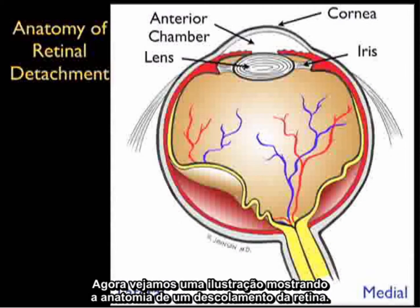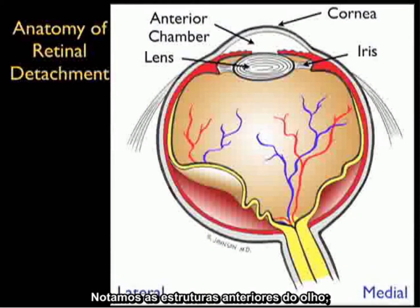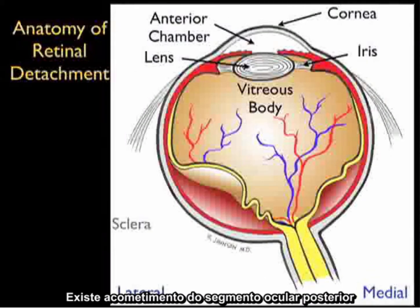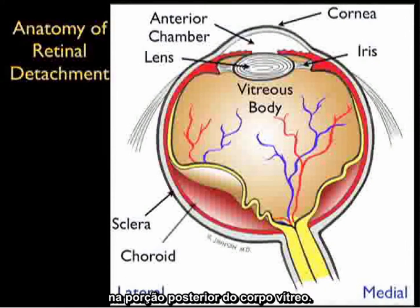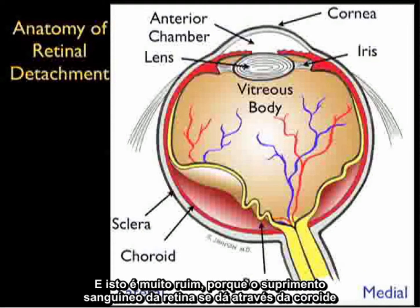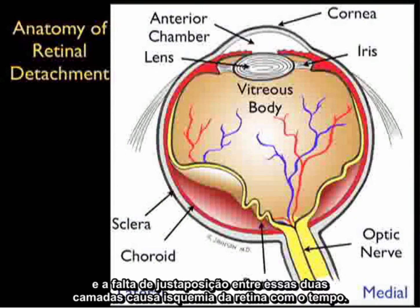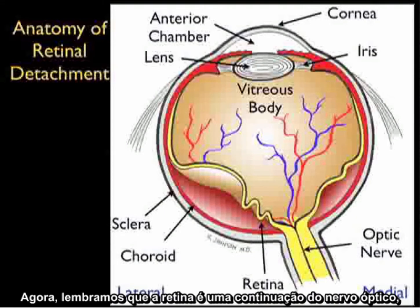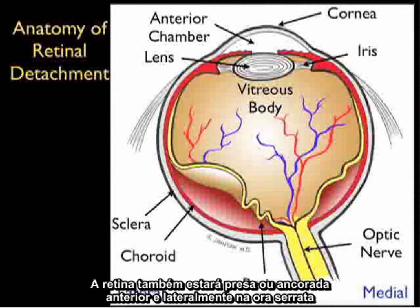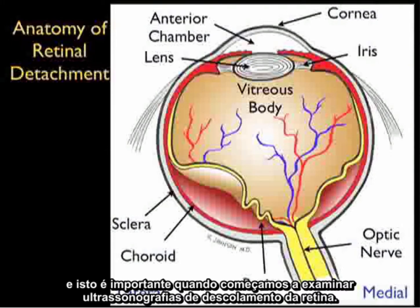Now let's take a look at an illustration showing the anatomy of a retinal detachment. The anterior structures of the eye — the cornea, anterior chamber, lens, and iris — are all normal. The pathology exists in the posterior aspect of the eye, where the retina has buckled away from the choroid, both medially and laterally. This is a very bad thing because the blood supply to the retina exists through the choroid, and lack of opposition of these two layers will cause ischemia of the retina with time. The retina is a continuation of the optic nerve and will always be tethered down there. It is also attached anteriorly and laterally at the ora serrata.